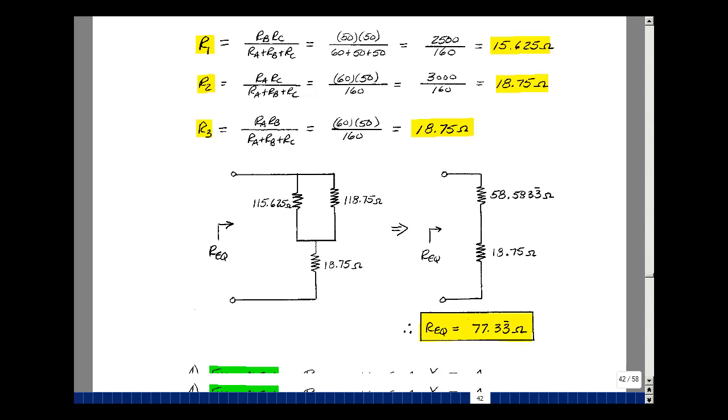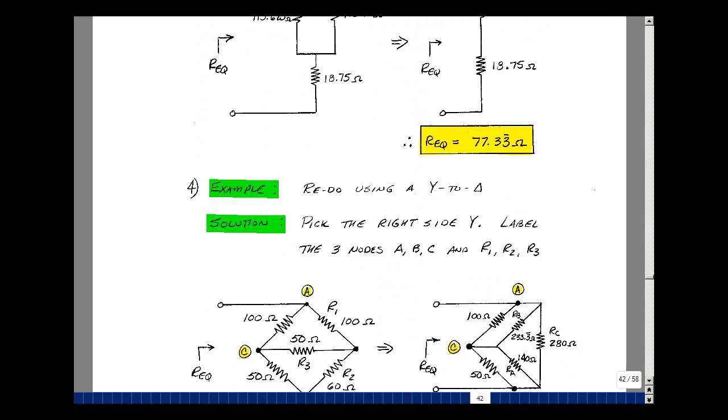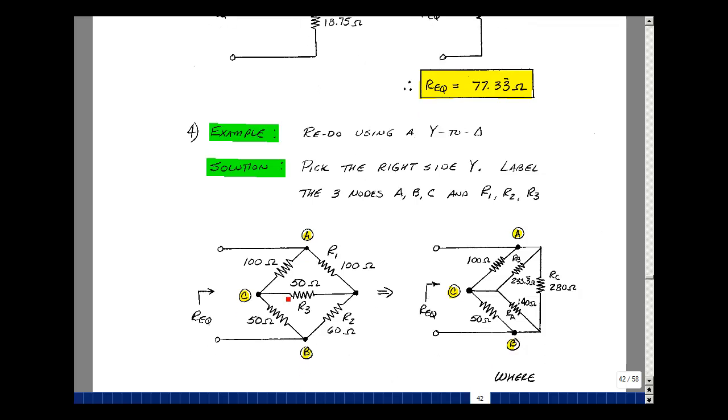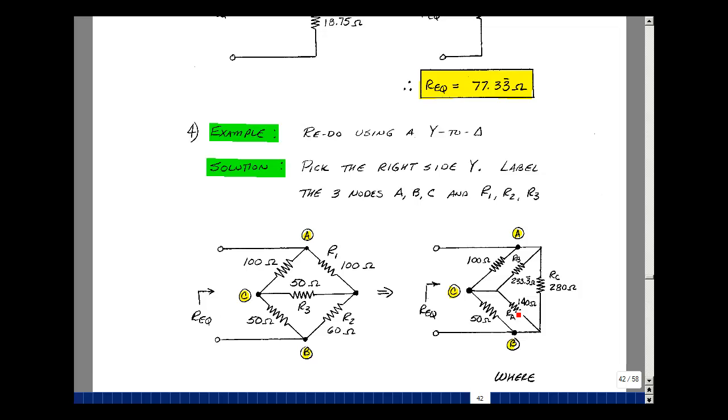Let's do the same problem again. Let's change Y to a delta. I'm going to take this Y and replace it with a delta. Again, you can pick any node and call it A, B, and C. This will be the extra node that's created. My delta is going to go between A, C, and B. So here's my A, C, and B. I kind of extend it a little bit so you can see the delta here. I'm going to label the resistor R1 connecting to A, R2 to B, and R3 to C. The delta, the resistance R sub B is across from node B, Rc is across from R sub C, and R sub A is across from node A.